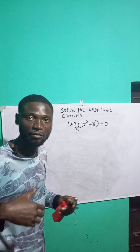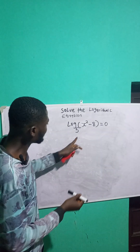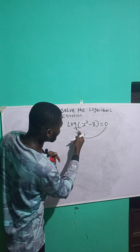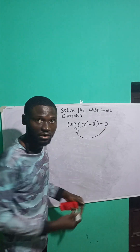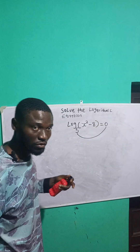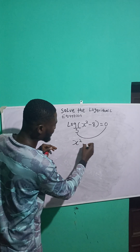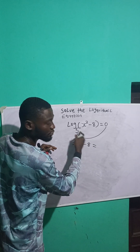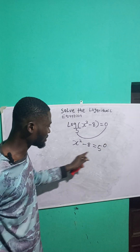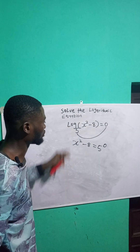The first thing is to convert this from a logarithmic equation to an exponential equation. To do that, 5, which is the base, will be dropped here — the base, which is 5, will be raised to the power of this 0. This becomes an exponential equation: x raised to the power of 2 minus 8 is equal to 5, which is the base, raised to the power of 0.